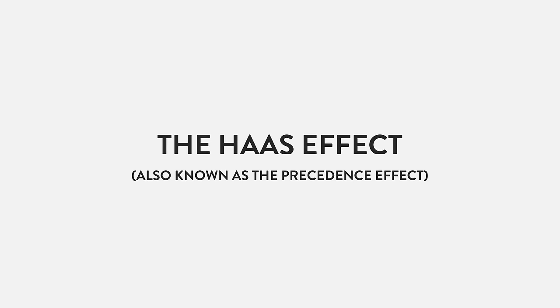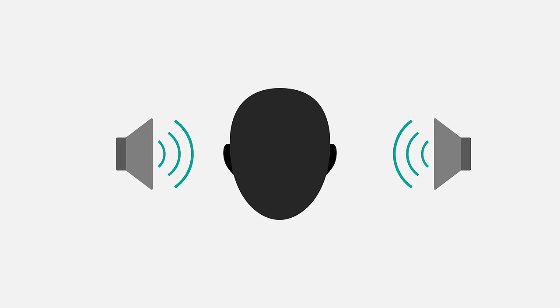This is known as the Haas Effect. It's a psychoacoustic phenomenon that works by splitting a signal and sending a slightly delayed version to one ear. Our ears then perceive the two sounds as coming from different directions, creating the illusion of stereo width from an otherwise mono part.